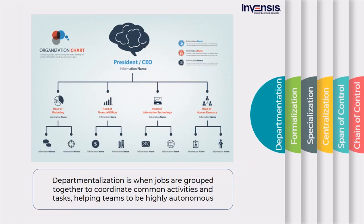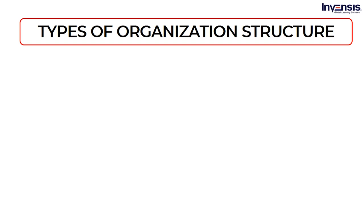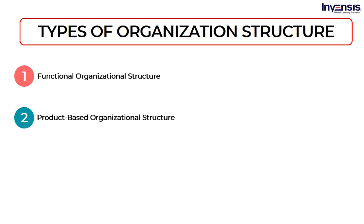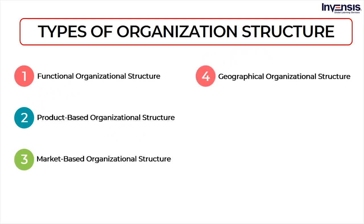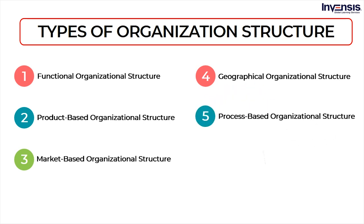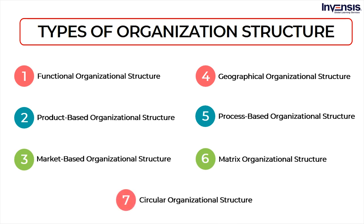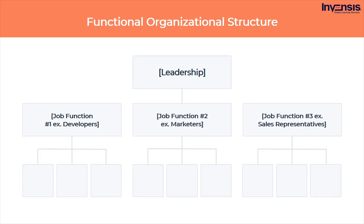Departmentalization or departmentation is when jobs are grouped together to coordinate common activities and tasks, helping teams to be highly autonomous. The different types of organization structure are functional organizational structure, product-based organizational structure, market-based organizational structure, geographical organizational structure, process-based organizational structure, matrix organizational structure, and circular organizational structure.